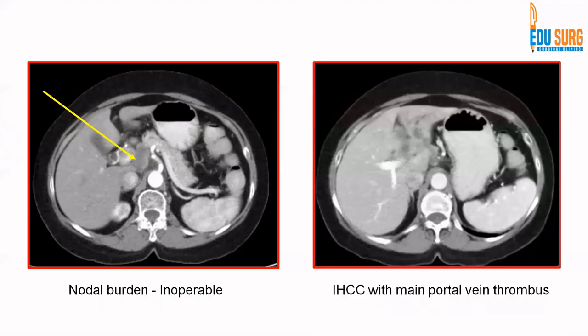Another case of intrahepatic cholangiocarcinoma in the left lateral segment and segment 4. The problem was that portal vein thrombus in the left portal vein was extending up to the main portal vein, which was also involved, as seen in the enhancing portal phase. That is why this patient was inoperable and kept on palliation.